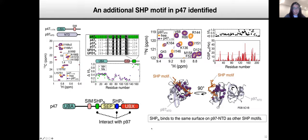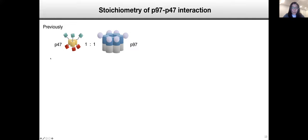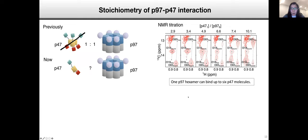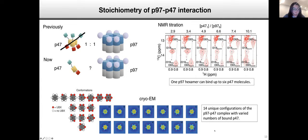The location of the site is on the flexible linker between UBA and SEP domain. The sequence of this new site is actually homologous to the previously identified SHIP motif. So we call this new site SHIP-N. Because P47 was previously thought to be a trimer, the binding stoichiometry was proposed to be one P47 trimer to one P97 hexamer. But now we know that P47 exists as monomers.